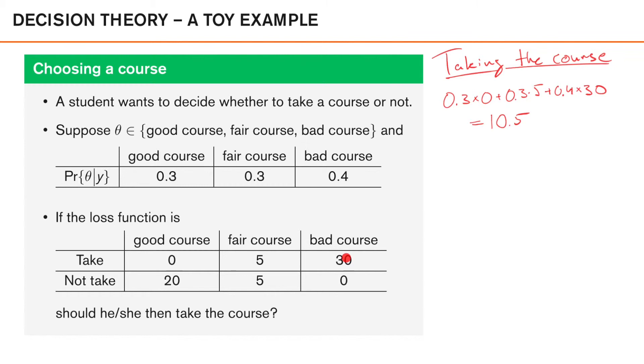Now, if we look at the expected cost for not taking the course, we have 0.3 times 20 plus 0.3 times 5 plus 0.4 times 0. Now, if we sum all these up, we get an expected loss of 7.5 for not taking the course.